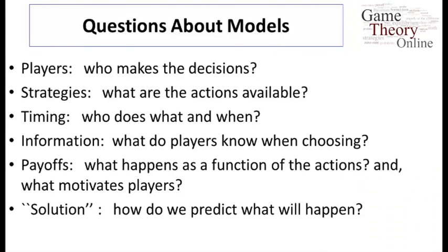In terms of modeling games, there are different essential ingredients we have to keep track of. Most importantly, we have to know who the players are — who's making the decisions. If we're modeling a company, do we model it as a single person or as many people? Then there are strategies: what are the actions available to the players? And timing: does one player move before another so they get to see what the other has done, or do they both move simultaneously in ignorance of what the other person is doing?